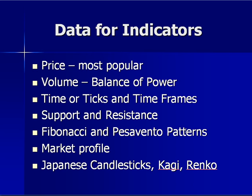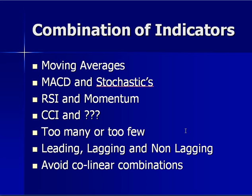You want to use a combination of two or three indicators for the best indication of what's going on. A lot of people use combinations like moving average with MACD or stochastic, RSI and momentum, or CCI. But a lot of times people get too many indicators. The problem is these indicators are collinear — they're showing you the same thing because they're all calculated on price. The more indicators you get, the more confused you get. If you think about memorizing a phone number, it's easy with an area code and seven digits, but try memorizing an international phone number and you get lost in the shuffle.